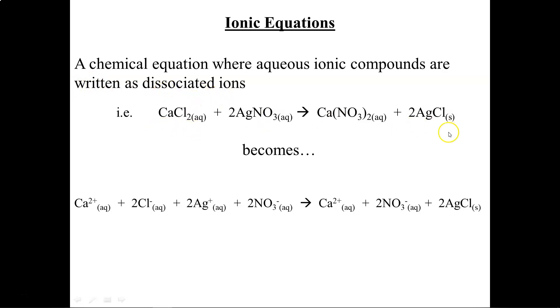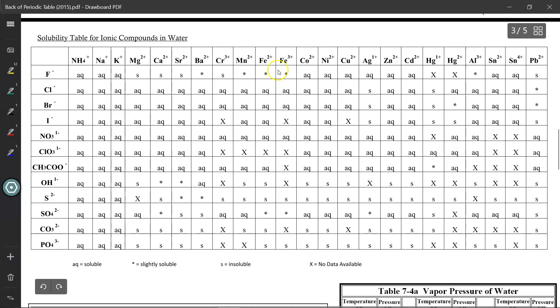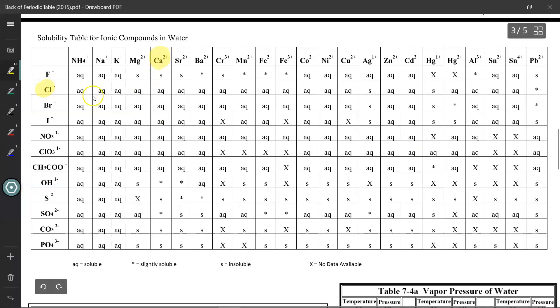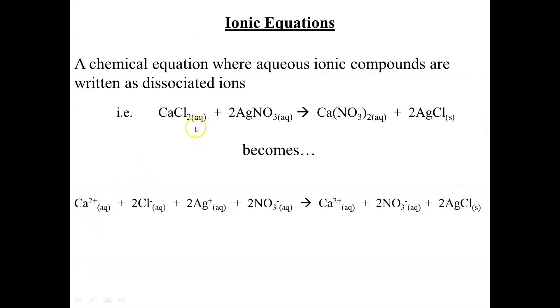For instance, in this double displacement reaction you would consult the solubility chart to determine the state of matter for each of these compounds. As a review, for calcium chloride you would look up calcium, you would look up chlorine, and where they intersect will tell you whether it's soluble or insoluble in water. In this case it says Aq, and Aq means soluble, dissolved in water, so we write Aq.